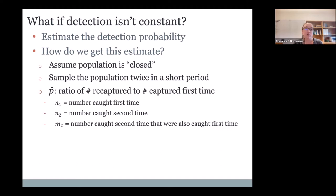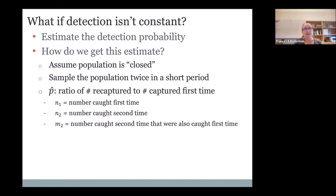The first thing we have to assume is that the population is closed — no births, deaths, or movement into or out of the population. We have to assume this because we're trying to estimate how many there are. If you're going to sample the population twice, you need to assume your abundance isn't changing between time one and time two. To ensure the population is closed, you have to sample very quickly in a short period of time when you know no births, deaths, or movement has occurred. This differs by species — for black bears, which are fairly long-lived, you can spread sampling out a bit. For small mammals with high mortality rates, you want to sample them very close together.